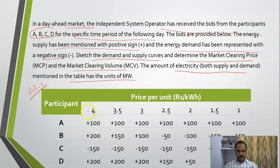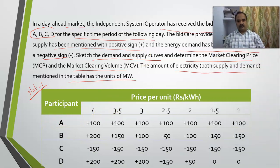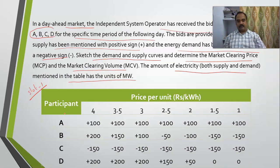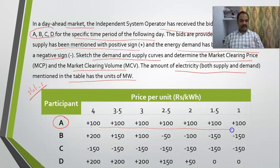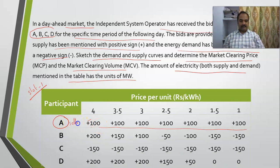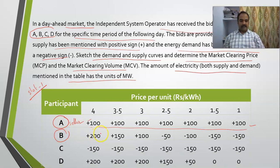This is the way how bids will be submitted over different price spans. This is the price span, this is participant A, and this is the amount of electricity which he is ready to trade. The plus sign indicates generation, so he is a seller. He is ready to trade 100 megawatts at whatever the price may be.